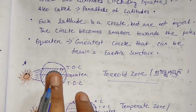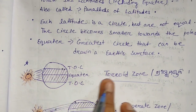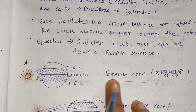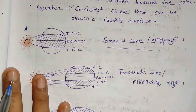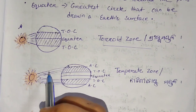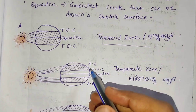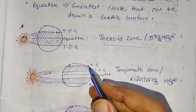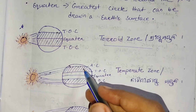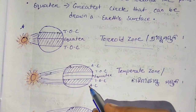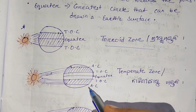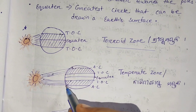Then I would look at the Tropic of Cancer, the Arctic Circle, the Tropic of Capricorn, and the Antarctic Circle.